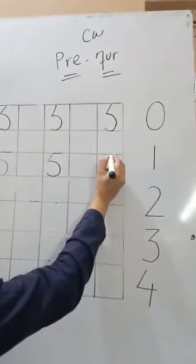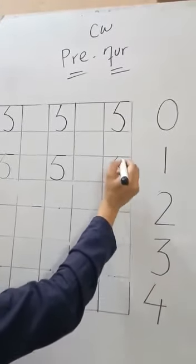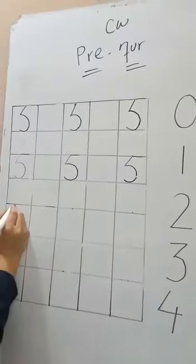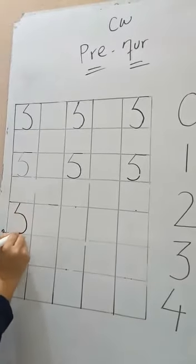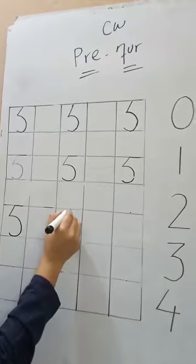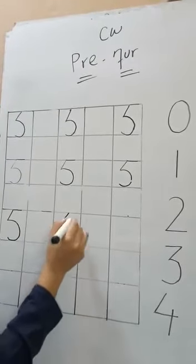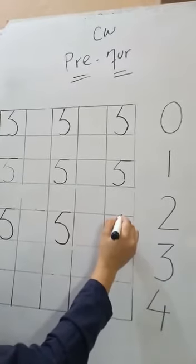Mere saath padhe 5. Draw a curve and then slipping line. 5. Standing line. Draw a curve and then slipping line. Slanting line. Draw a curve and then slipping line. That make number 5.